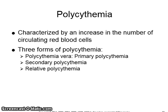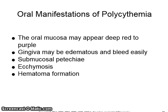Polycythemia is characterized by an increase in the number of circulating red blood cells. There are three forms: primary, secondary, and relative. Oral manifestations include oral mucosa appearing deep red to purple, gingiva that may be edematous and bleed easily, submucosal petechiae, ecchymosis, and hematoma formation.